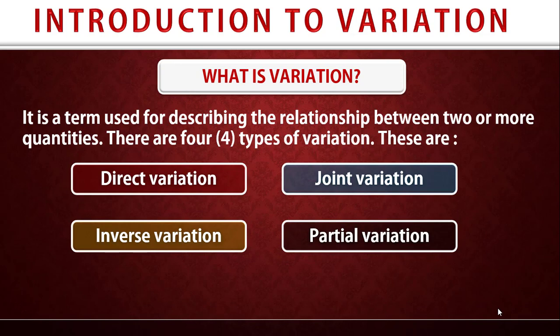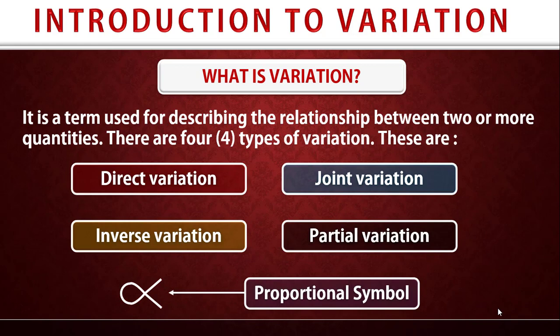So I'll be treating these four types of variation in different lessons. The symbol for variation is given to be this, and this is called the proportional symbol. Sit back as I walk you through all the types of variation.